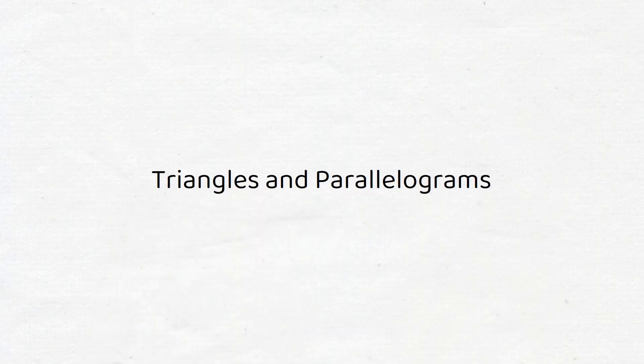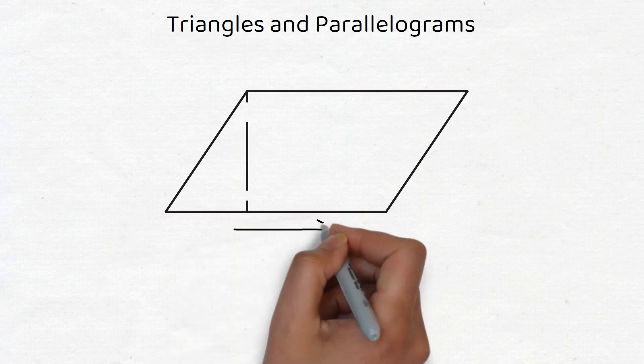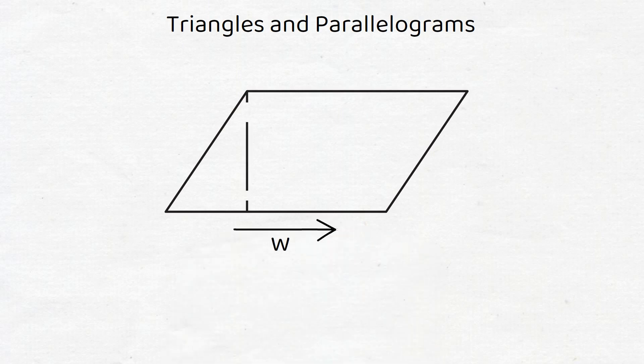Triangles and parallelograms. A parallelogram is a quadrilateral that has two pairs of parallel sides. Let's look at this picture. Note that the height of a parallelogram is not the length of the slanted side. It's the length of the dashed line from one side to the opposite side, also called the perpendicular.